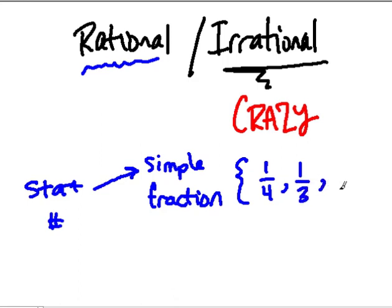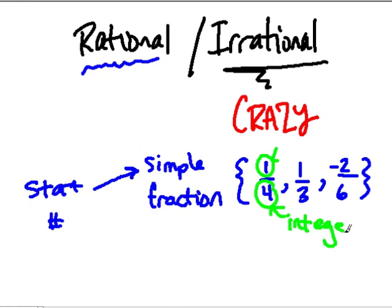How about another one? How about negative two-sixths? Alright. Now these are all simple fractions because each of them have a numerator or a denominator that's an integer. Erica, do you want to say what an integer is? Sure. Integers are whole numbers and their opposites. So integers are positive and negative whole numbers.